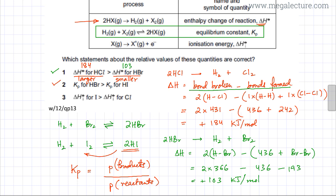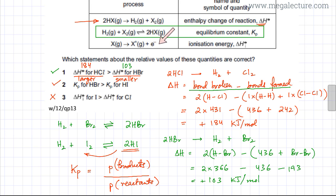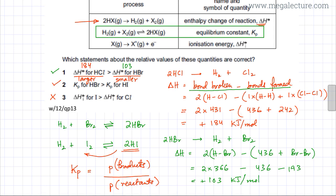Moving to the third statement, which concerns ionization energy (ΔHi) and claims that ΔHi for iodine is greater than ΔHi for chlorine. This statement is incorrect. Iodine is a larger atom, so its outer electron is further from the nucleus and much easier to remove. Ionization energy decreases down the group. Chlorine is smaller, its electrons are held more strongly, and more energy is required to remove them. So iodine has lower ionization energy than chlorine.